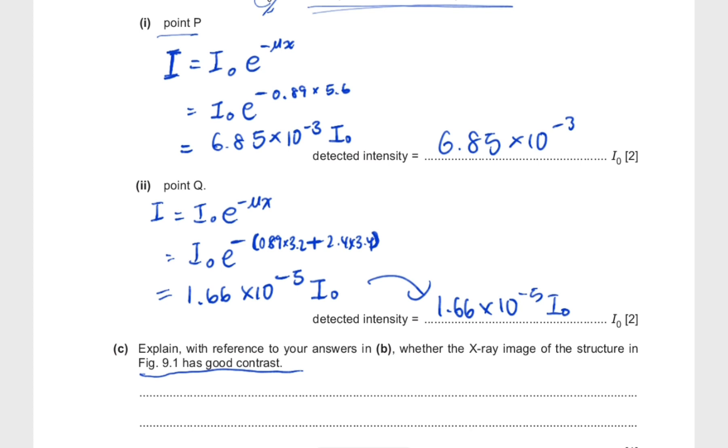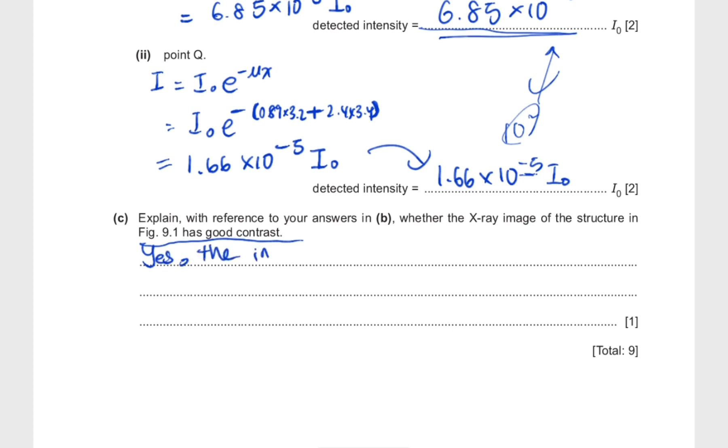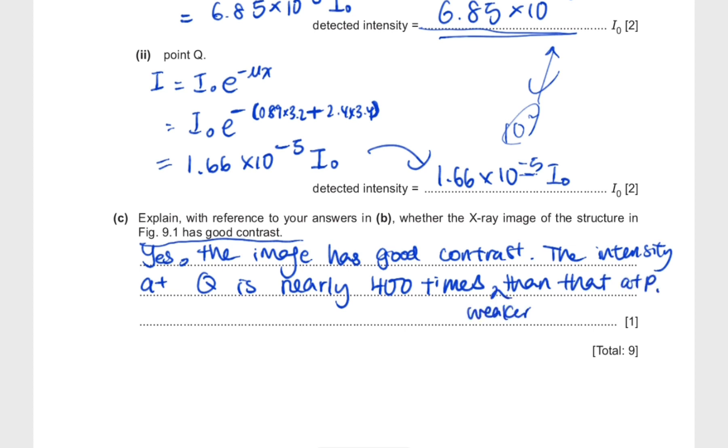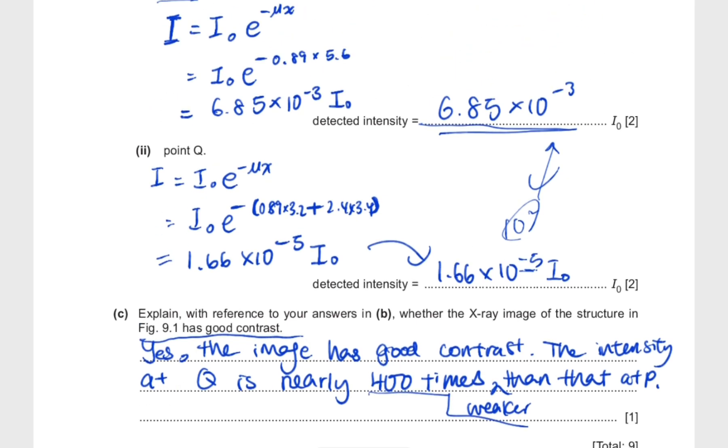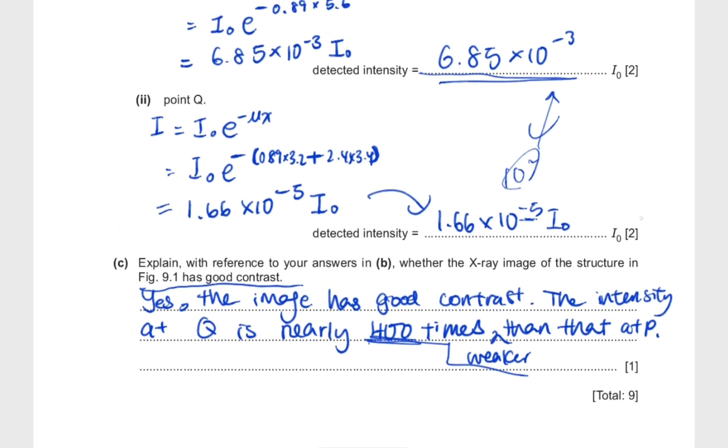You have to use the two values here. If it's covered by bone, the intensity is much lower. It's actually lower by this 10 to the power of 2, that's the difference between these two. So the difference is quite big. You can first of all give them a very simple answer: yes, the image has good contrast. The intensity at Q is nearly 400 times weaker than that at P. You can just do some division and simply get the ratio for that. The main thing is that you should show that you have used these two values in order to obtain this answer, in order to get the full mark for this question.